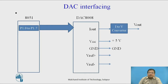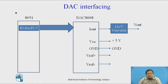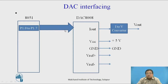This is very simple interfacing with the 8051. From the 8051 side, only one 8-bit port is required — no other control signals are needed. Here we are using Port 1 of the 8051, connecting it to the data pins D0 to D7 of the DAC 0808. The output is I_out, which is the current output, but we need the output in terms of voltage most of the time.